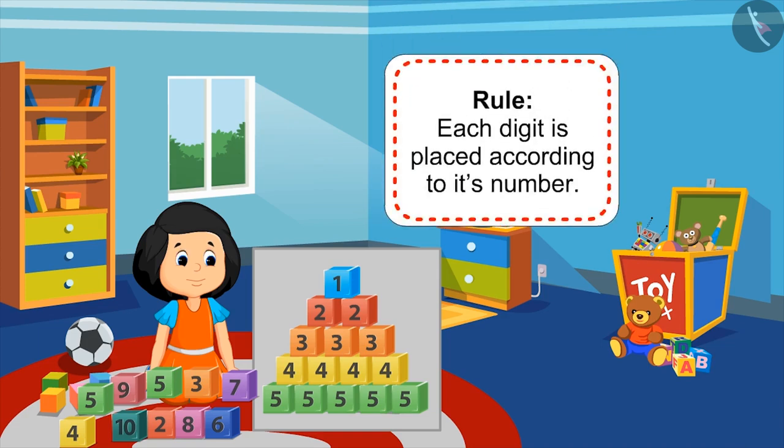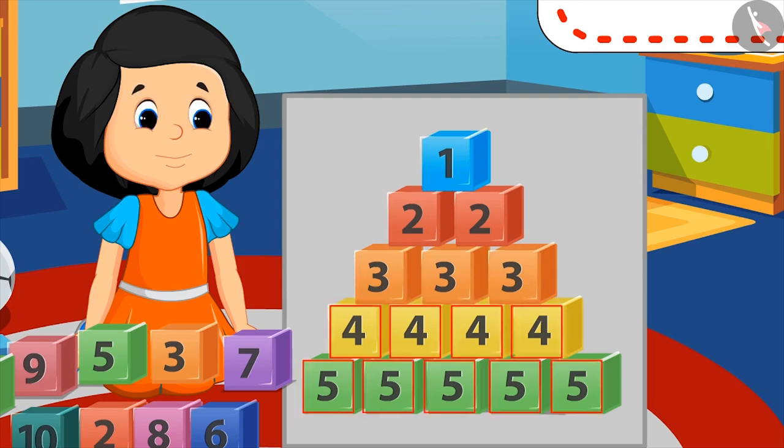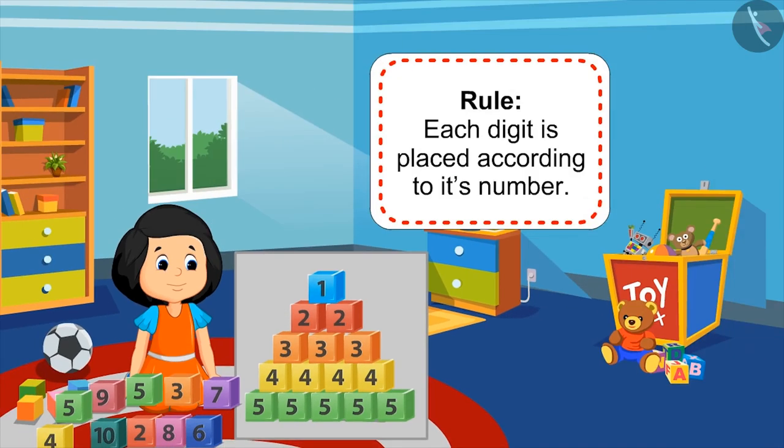Yes, each digit is placed according to its number. One for one time, two for two times, and three for three times. And this is how this pattern has been carried forward. Come kids, let's look at some more examples of number pattern.